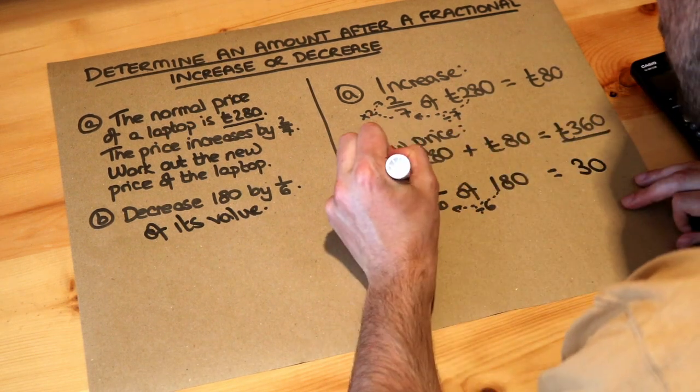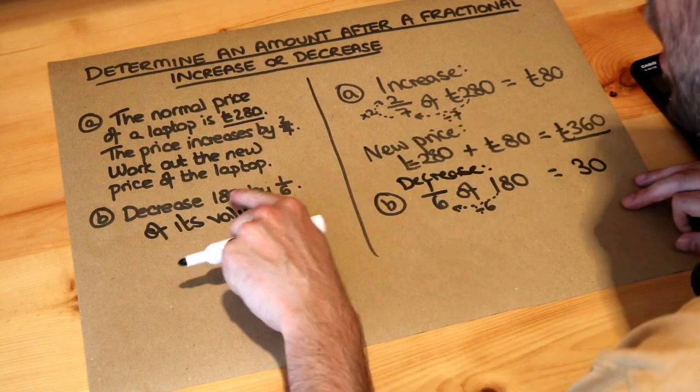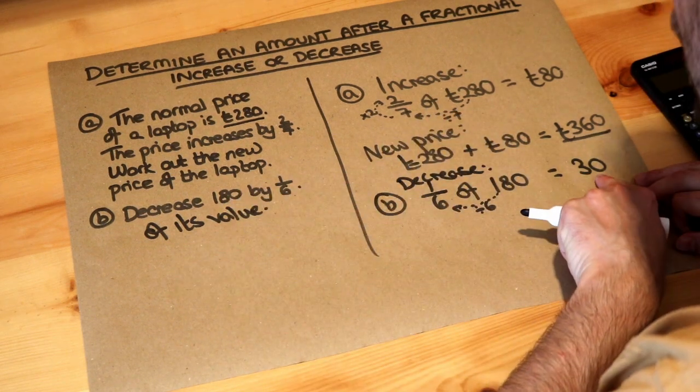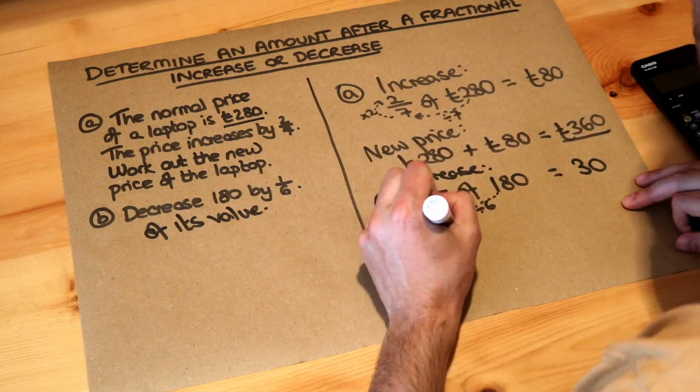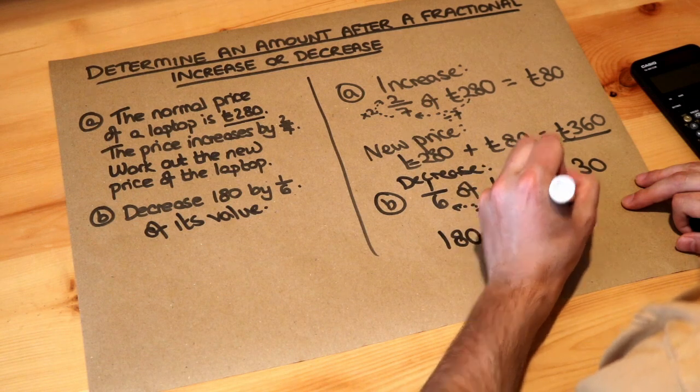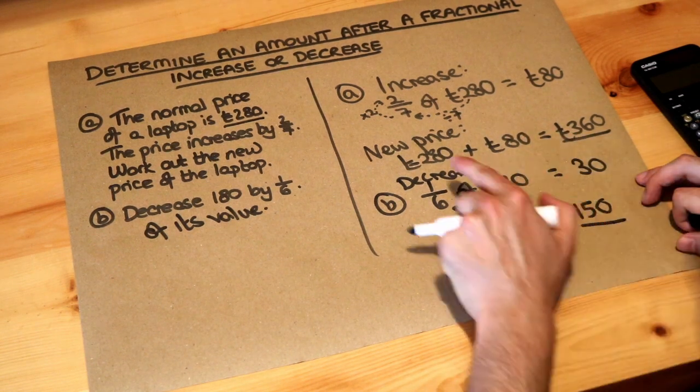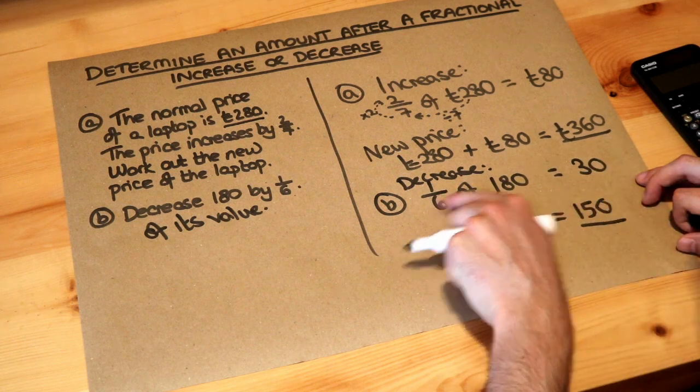So that is the decrease, and because 180 is decreasing by that amount we just want to subtract it. So 180 minus 30 is equal to 150, and that is the new amount after the decrease of a sixth of its amount.